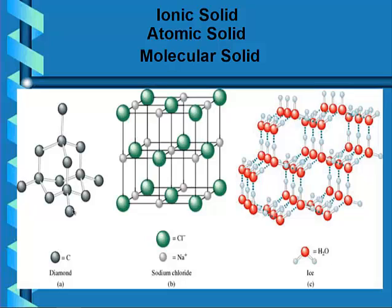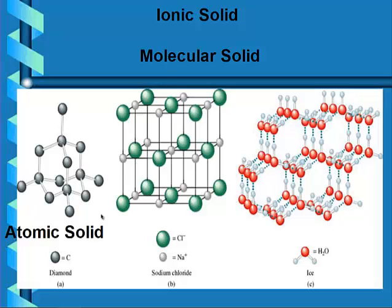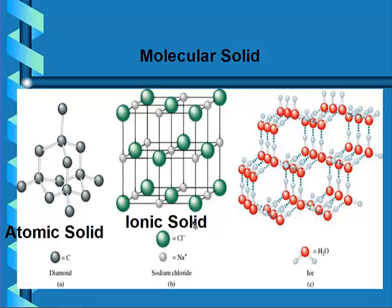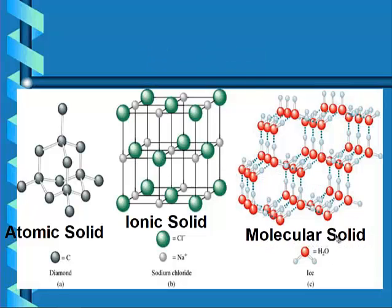This first one, diamond, has carbons at each lattice point. Carbon is an atom, so this would be an atomic solid. The middle one, sodium chloride, has sodium and chlorine ions at each lattice point, and that would be an ionic solid. And over here with ice, we have water molecules at each lattice point — water is a molecular solid.